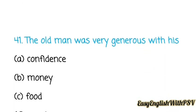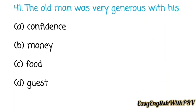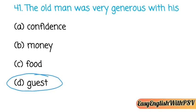Question number forty-one, the second last in this video: The old man was very generous with his — confidence, money, food, or guest? The answer is: with his guest. The peddler was his guest. He not only gave him food to eat but also provided tobacco for his pipe, and they played Mjolis before sleeping.